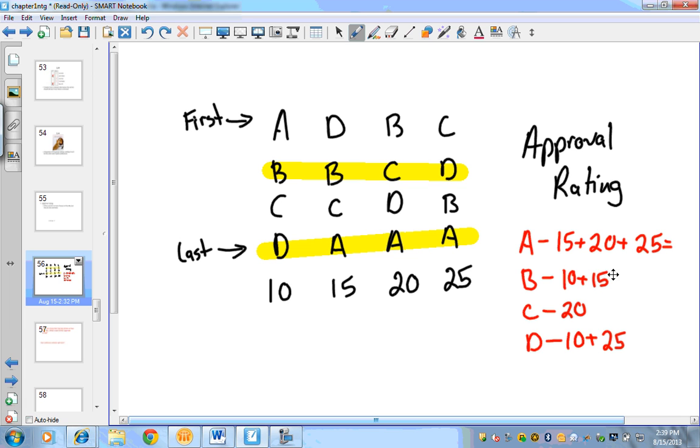So who wins here? Well, very simply, we just add what we have. That is 60 for A. And then this is going to be 25. This is going to stay 20 and this is going to be 35. So in this case, if we were working off a problem where everybody approved of their second and fourth place choice, then A would be our winner. And we're going to try one more and then we'll be done with this video.